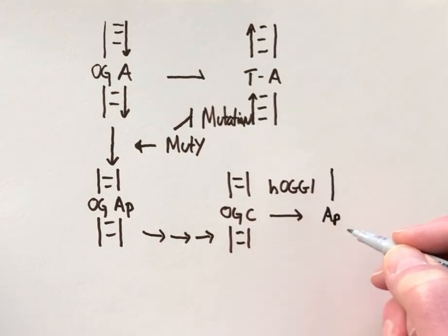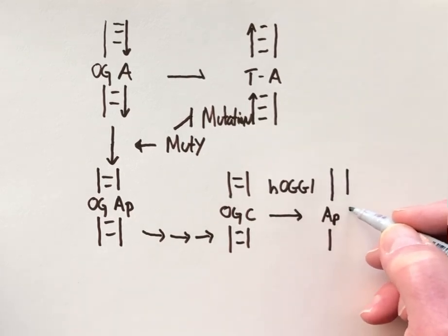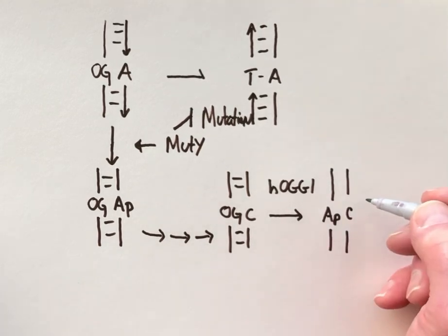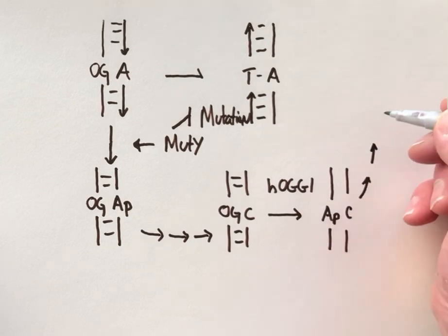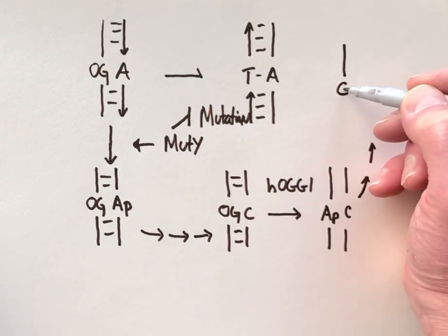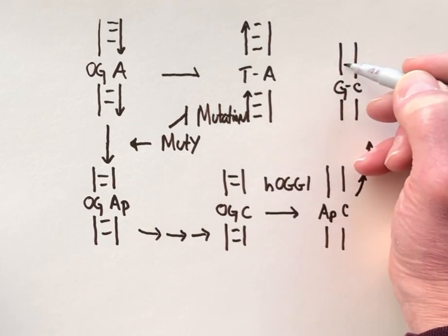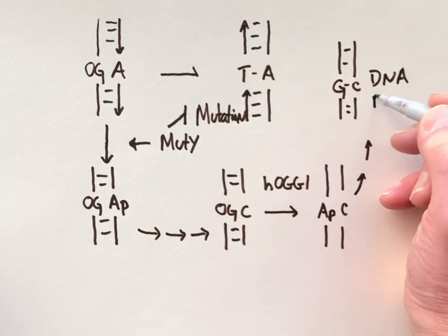Also creating an apurinic, apyrimidinic site. And then these same generalist DNA repair enzymes can now repair the AP site to create the original information, which was a GC. So this is now DNA that's been repaired.